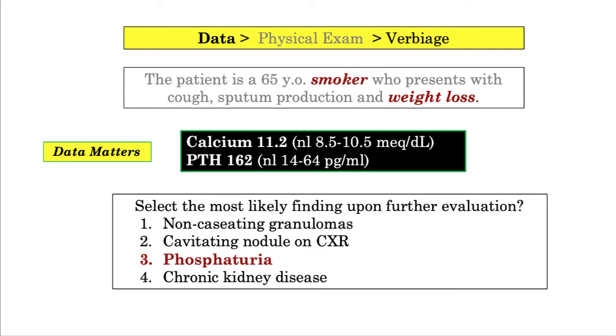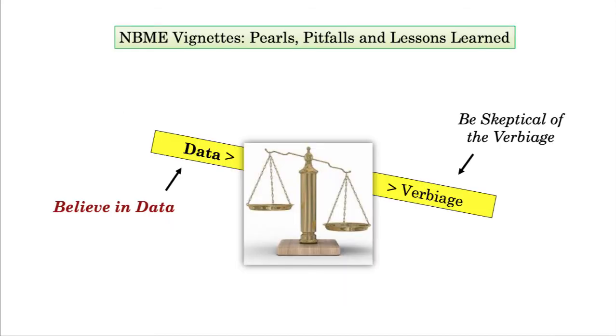Hyperparathyroidism is associated with urinary wasting of phosphate. I can offer you countless examples of question stems using deceitful verbiage to tempt the medical student away from an obvious diagnosis or straightforward derivative. You need to prioritize data when reviewing question stems and maintain a healthy skepticism of their verbiage.